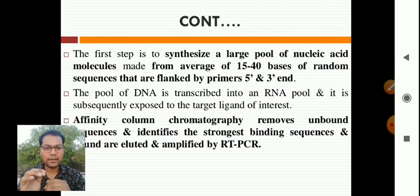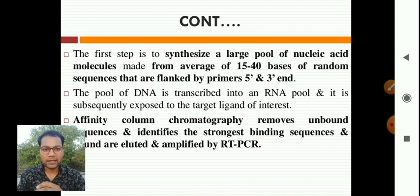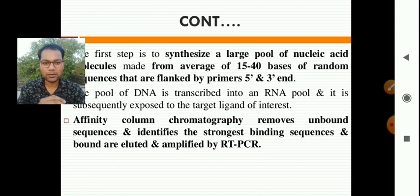The first step is to synthesize a large pool of nucleic acid molecules made from an average of 15 to 40 bases of random sequences that are flanked by primers at the 5' and 3' ends. The pool of DNA is transcribed into an RNA pool and it is sequentially exposed to the target ligand of interest. Affinity column chromatography removes unbound sequences and identifies the strongest binding sequences; bound sequences are eluted and amplified by RT-PCR.